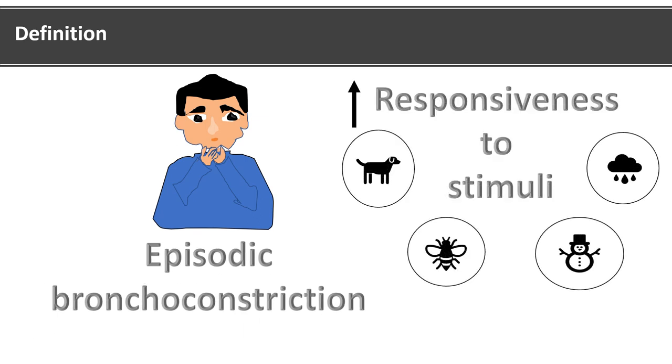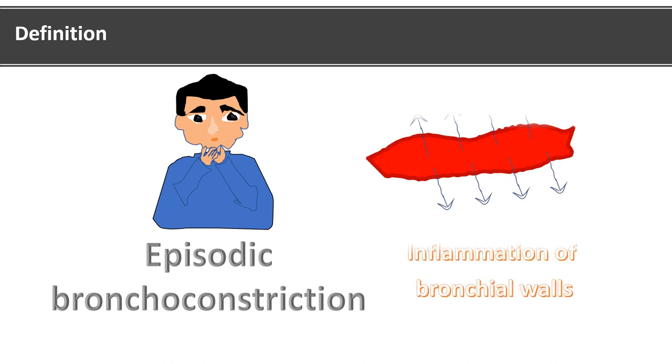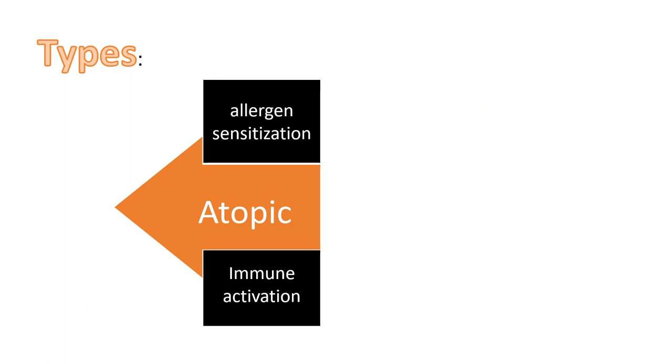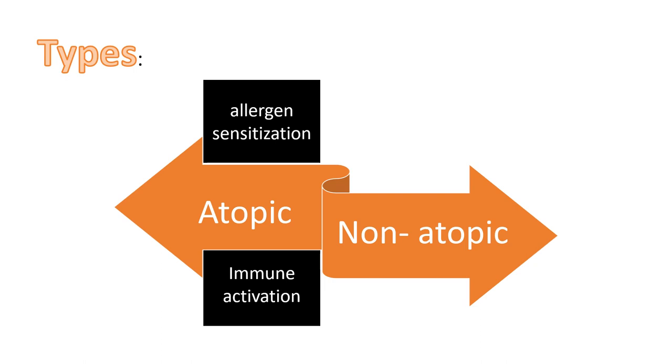Asthma can be divided broadly into two types: one is atopic, another is non-atopic. Now the characteristic of atopic asthma is that it is due to allergen sensitization which causes immune activation. It has a positive family history, presence in childhood, and is due to various environmental stimuli.